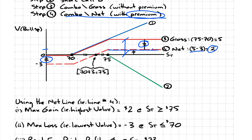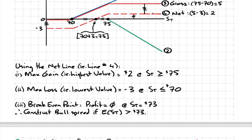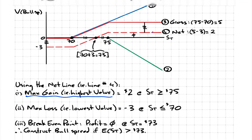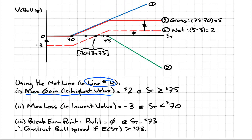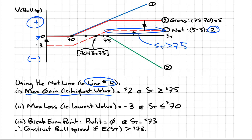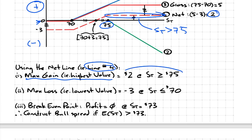Now that the plane is fully labeled, we can answer the critical point questions. The first: what's the most I can make? Follow the net line, which is line number four. What's the highest value that position reaches? Anything above zero is a gain. The highest positive the net line reaches is two, and this occurs for any price greater than 75. For any price greater than 75, you walk away with $2 profit.